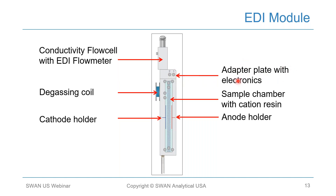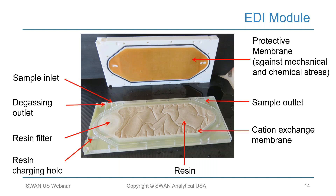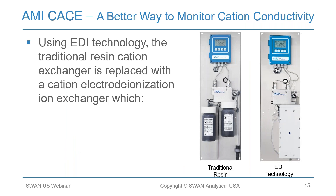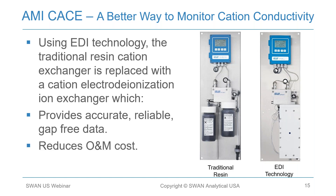Here is the EDI module disassembled. There is a protective membrane to protect the membrane and resin from mechanical and chemical stress. The sample comes in here, there is a degassing outlet port, a resin filter in the membrane module to avoid resin escaping the module, and a resin charging hole. This is the resin contained inside the cation exchange membrane, and the sample exits here. Using EDI technology, the traditional resin cation exchanger is replaced with a cation electrodeionization ion exchanger, which provides accurate, reliable, gap-free data and reduces O&M costs.